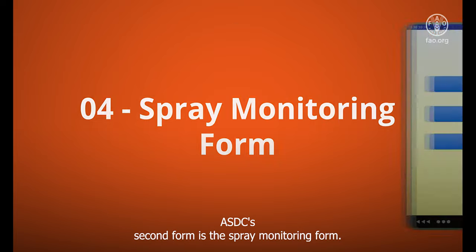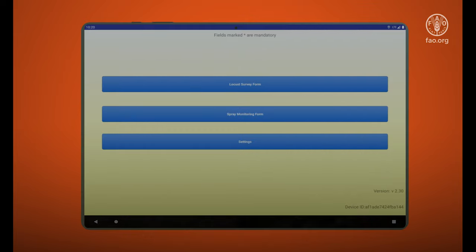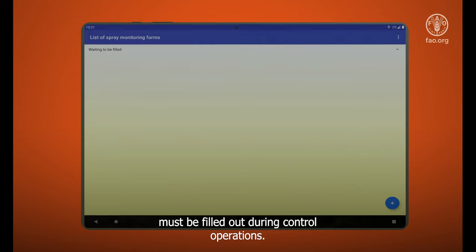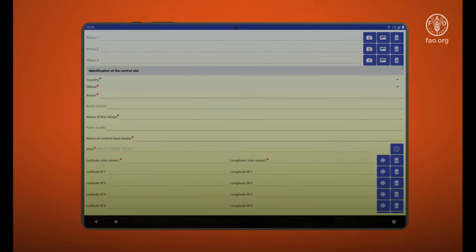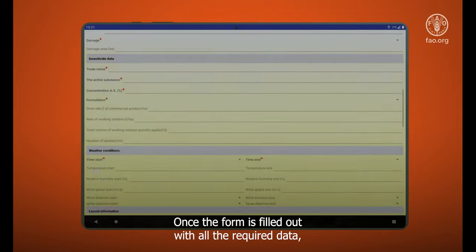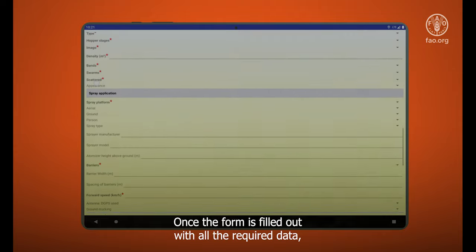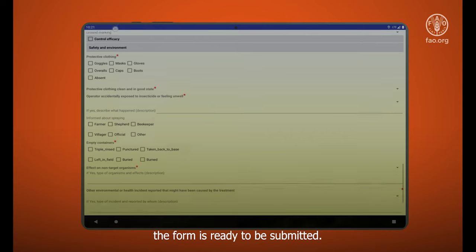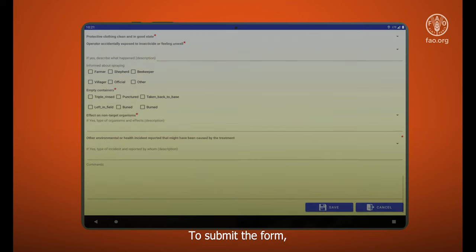ASDC's second form is the Spray Monitoring form. This form must be filled out during control operations. This form functions similarly to the LOCUS survey form. Please insert as much information as possible. Once the form is filled out with all the required data, the form is ready to be submitted. To submit the form, ensure that the data is correct and press the Save button.